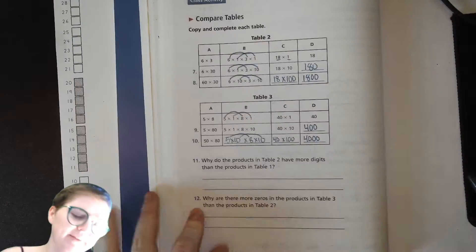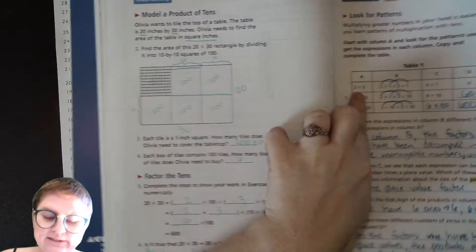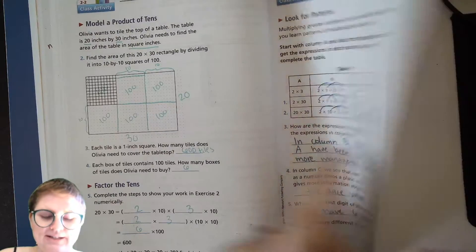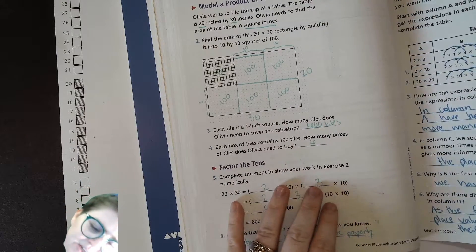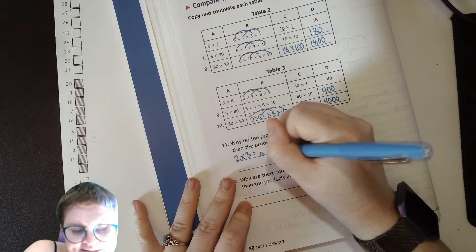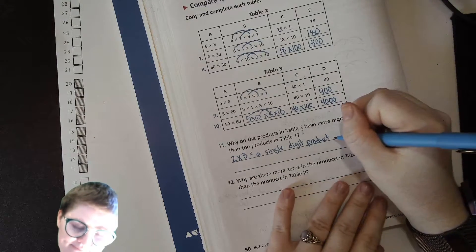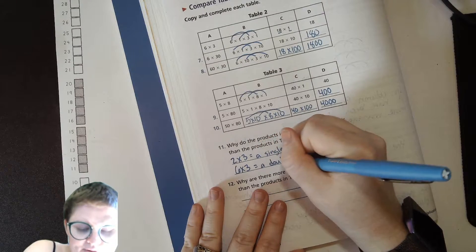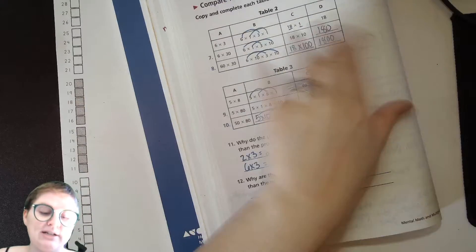So it's really based on what the factors, right? If the single digit version of the factors leads to a single digit answer, it will have fewer digits when you increase your place value than something. Let me think of a simpler way to write that. So we'll say two times three equals a single digit product. Six times three equals a double digit product. And that continues to be true as you increase in place value.